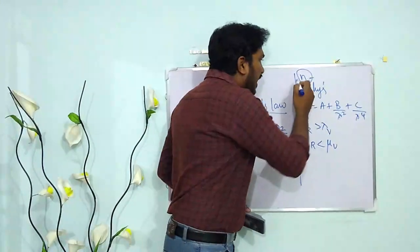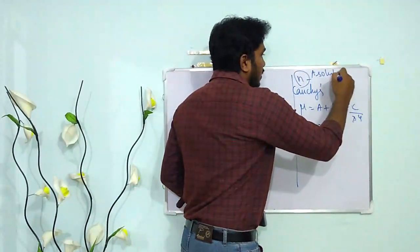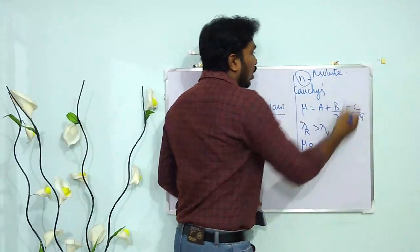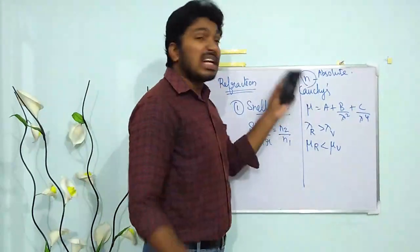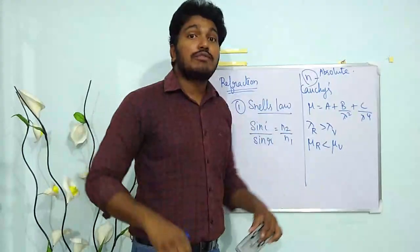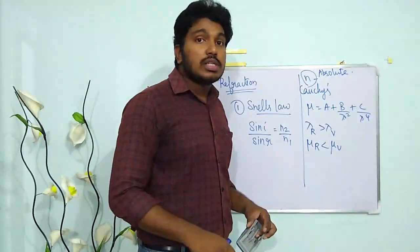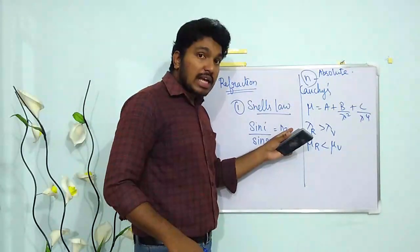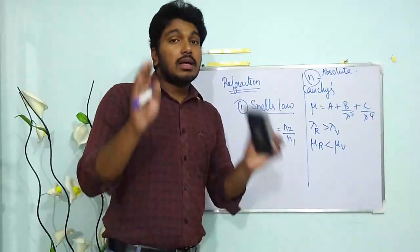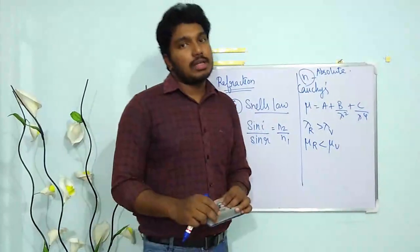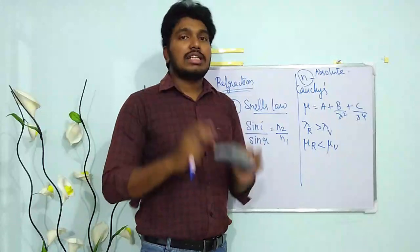The refractive index n here denotes the absolute refractive index. When we compare the refractive indices of two media, n1 and n2, we use the term refractive index of medium 2 with respect to medium 1, and we call it the relative refractive index.